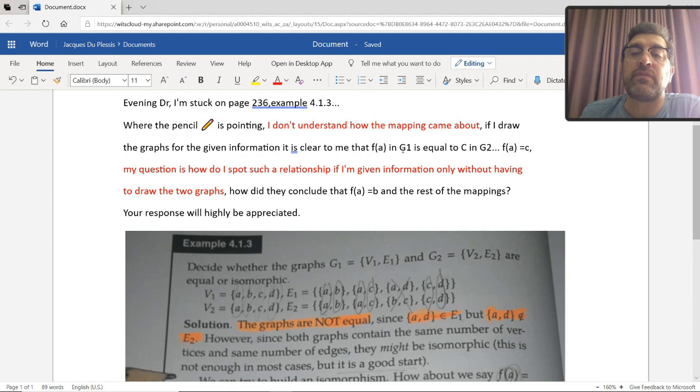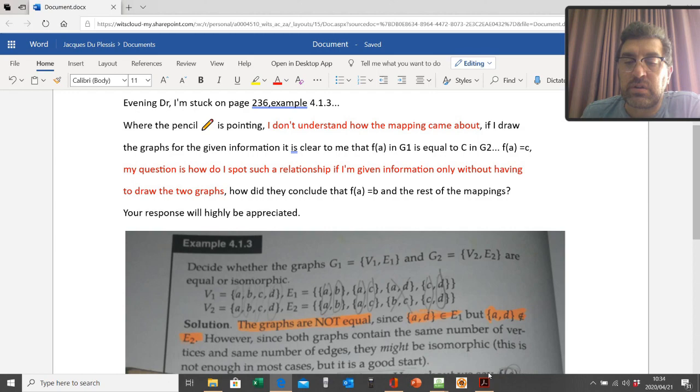So he says if I draw the graphs for the given information, it is clear to me that f of a in graph 1 is equal to c, which is in graph 2. So that means the rule f maps vertex a onto vertex c. My question is how do I spot such a relationship if I'm given information only without having to draw the two graphs? How did they conclude that f of a is b and so forth?